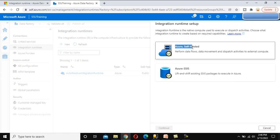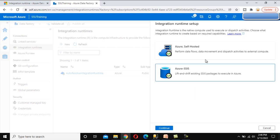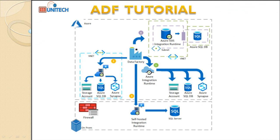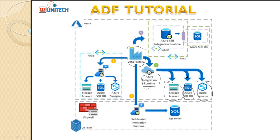If you want to create a new IR, click New — it opens a window with options to create Azure IR, Self-hosted IR, or Azure SSIS IR. We will see those in upcoming videos. The current data factory uses the Azure type of IR, which is system-generated by default. When the source or destination is a storage account, this Azure IR is used. Similarly, for Azure SQL DB — in our copy data activity we used Azure SQL DB as source and destination — it used the Azure IR.